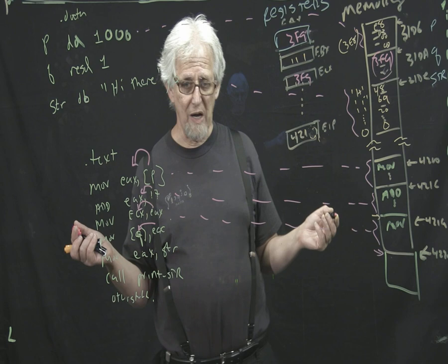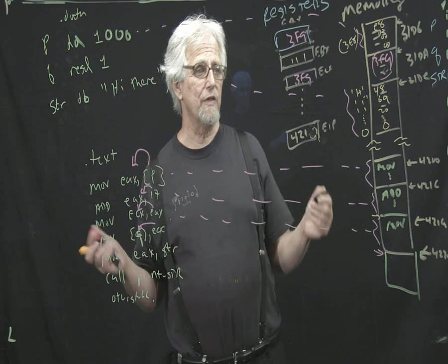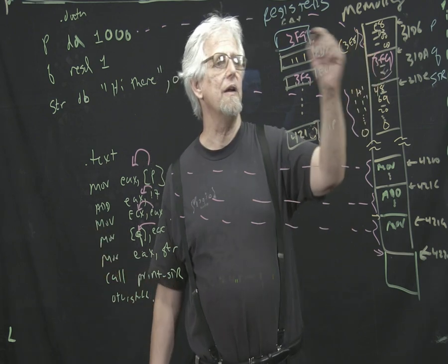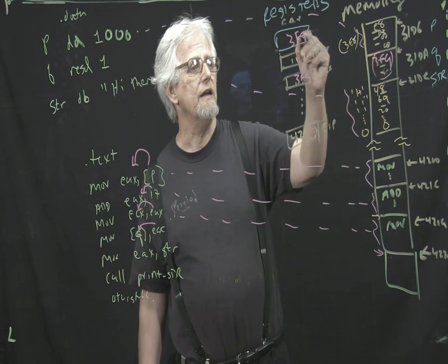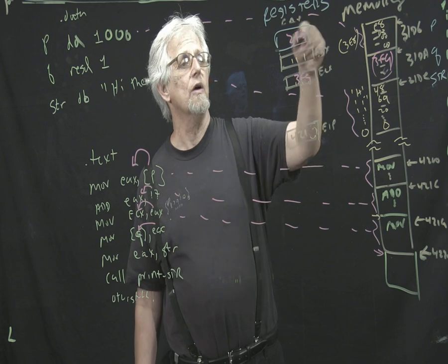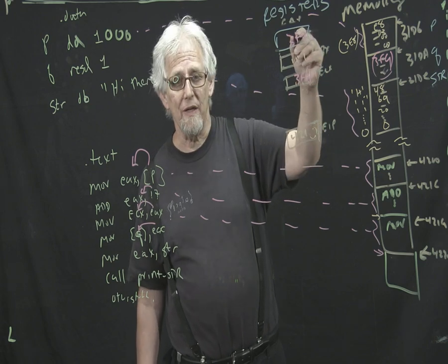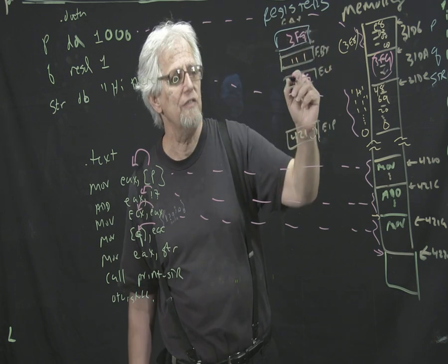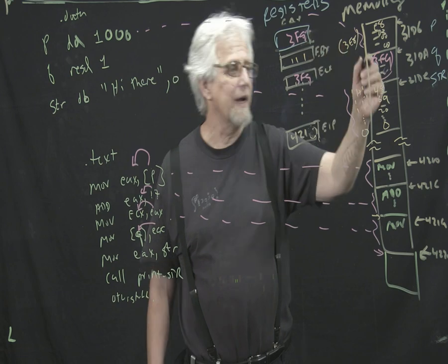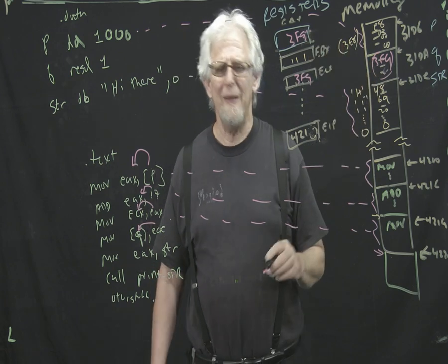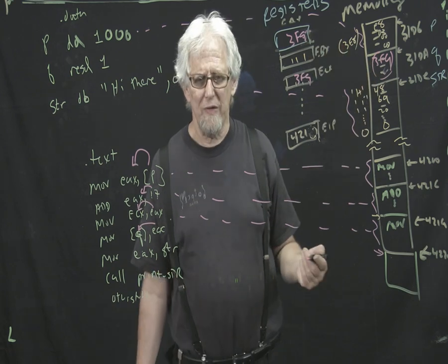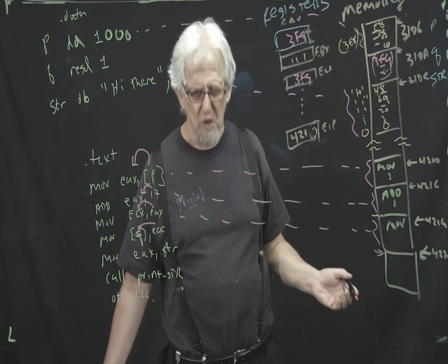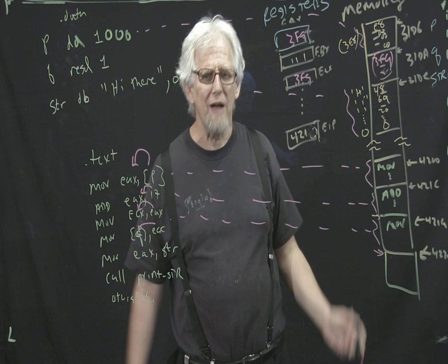Now ECX is going to get moved into the piece of memory. Remember, brackets mean go into the memory at the spot Q. So here's the spot Q, and this will now become 03F9. That's 4 bytes. So we moved this thing from P to EAX, added something into EAX, moved EAX to ECX — we didn't need to, just showing you that you could.